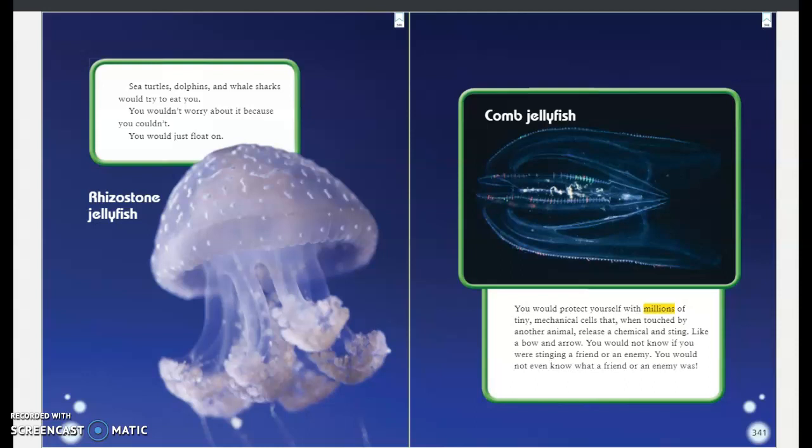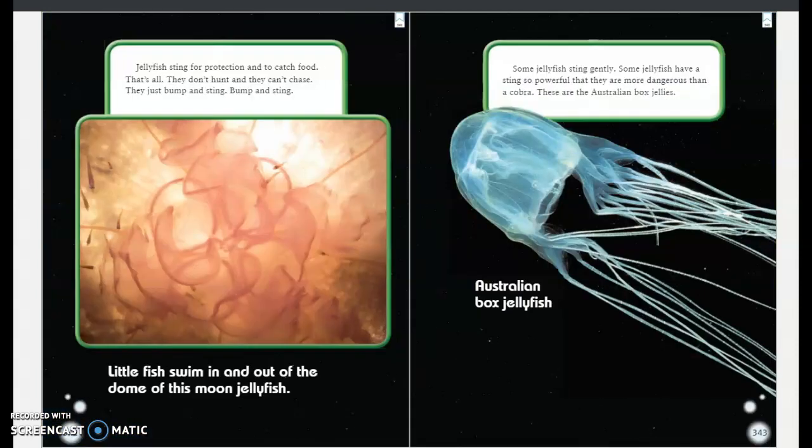You would protect yourself with millions of tiny mechanical cells that, when touched by another animal, release a chemical and sting, like a bow and arrow. You would not know if you were stinging a friend or an enemy. You would not even know what a friend or an enemy was. Jellyfish sting for protection and to catch food. That's all. They don't hunt and they can't chase. They just bump and sting. Bump and sting.